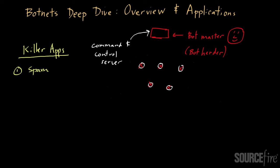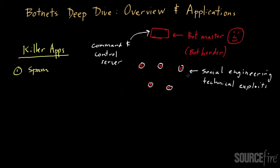Those systems might have been compromised via things like social engineering, where somebody got tricked into compromising themselves, or it could have been a technical exploit. Those are the two main ways a system can become compromised. The upshot is that these systems have some type of malware on them, and that malware looks to a bot master for what to do next. Typically, the bot communicates with the bot master via a command and control server, which provides commands back to the bot over protocols like IRC, HTTP, and peer-to-peer.